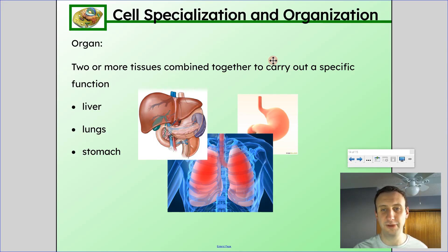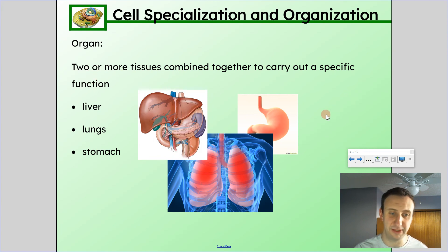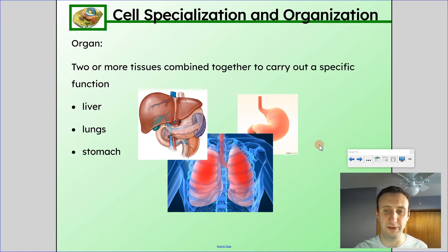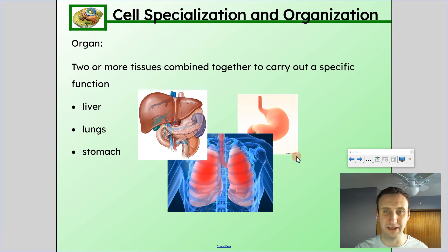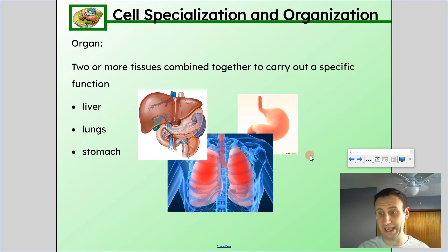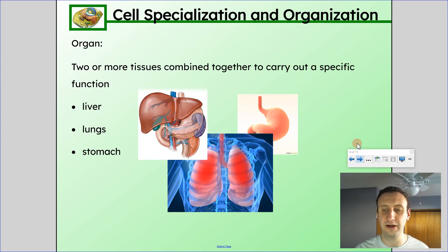If two or more tissues combine together to carry out a specific function, we have an organ. Examples of organs are the liver, the lungs, and the stomach. These are made up of more than one tissue but carry out a larger function. For the stomach, it has to do with digestion of food — it's specially designed to pump enzymes and hydrochloric acid into it to digest food and also to have some mechanical movement and digestion occurring. Organs are tissues combined together to perform a larger function.